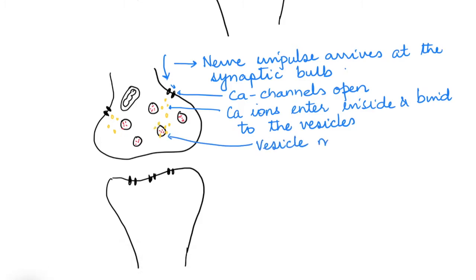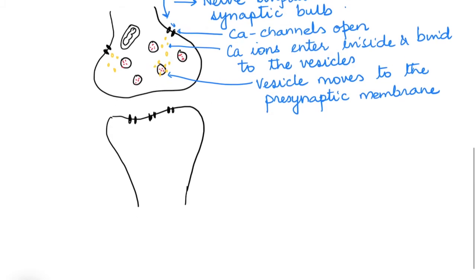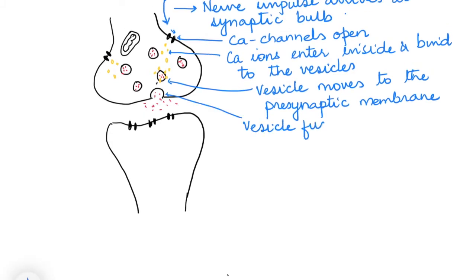Now as soon as the calcium binds to the vesicles, the vesicles start to move and reach the pre-synaptic membrane. Then it fuses with the membrane and releases the neurotransmitters out by a process that is called exocytosis.